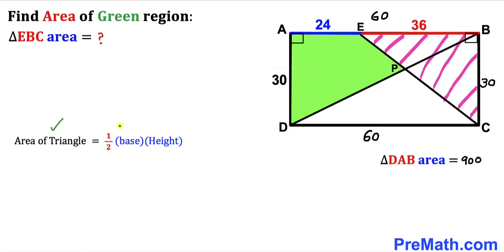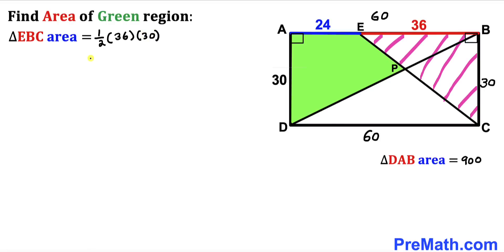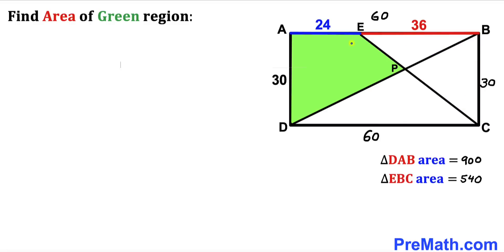Now let's focus on right triangle EBC, applying the same area formula: area = ½ × base × height. The base is 36 and the height is 30. Therefore the area of triangle EBC is ½ × 36 × 30, which gives us 540 square units.